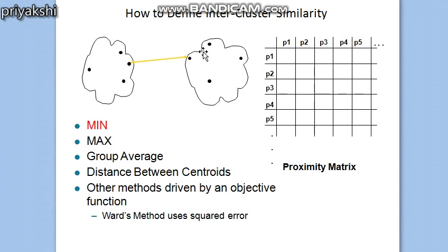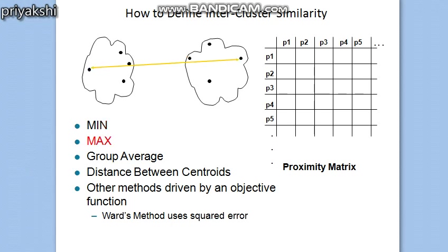So if you are defining single link or minimum hierarchical clustering, you define the proximity measure as the minimum distance between the two points which are in different clusters.